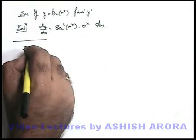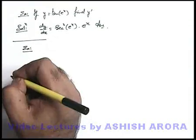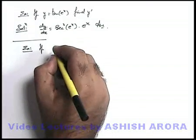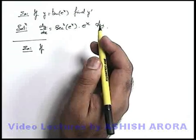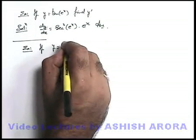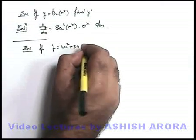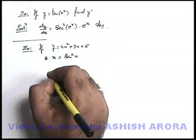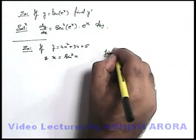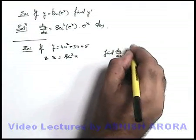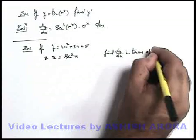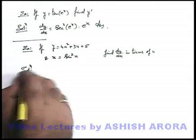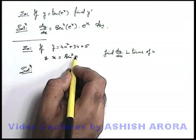Let me take one more example in the same sequence — a slightly different type. Sometimes in questions, y and x are given in terms of another variable. Like y is given as 4u squared plus 3u plus 5, and x is equal to sine squared u, and we are asked to find dy/dx in terms of u. This is also a direct implication of the chain rule. Here y is given in terms of u and x is also given in terms of u.